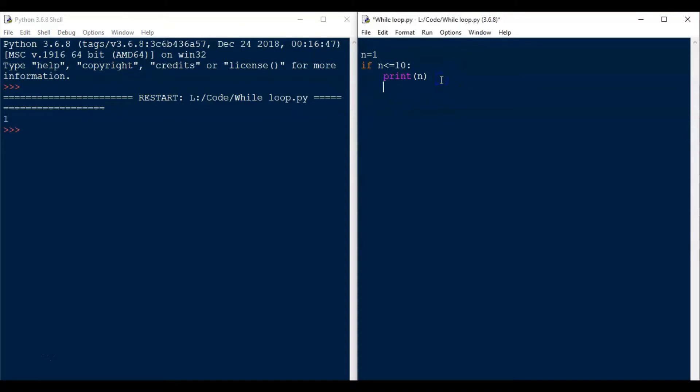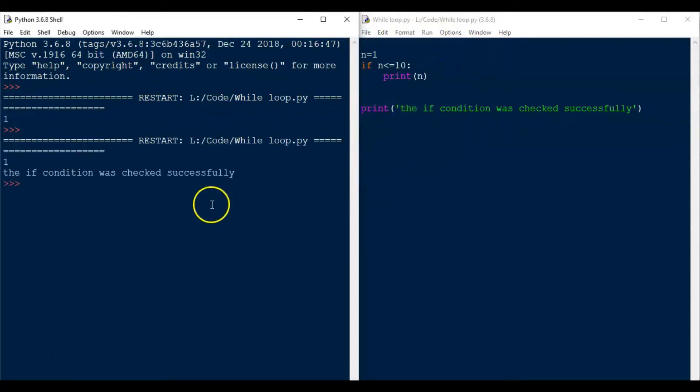Now, let us add one more print statement here. Let us write print if condition was checked successfully. Save the file and run the code. The n value is printed and after that the statement if condition was checked successfully is also printed.